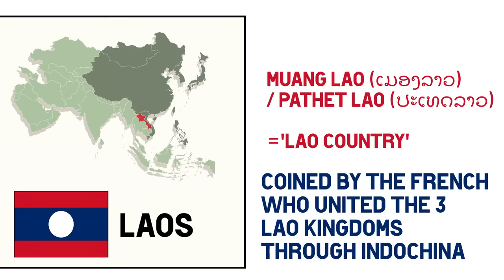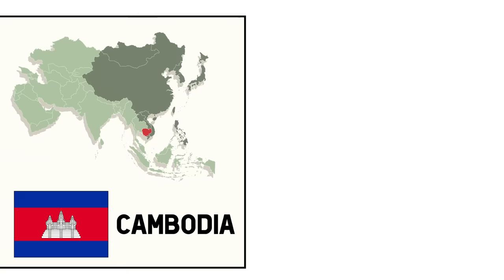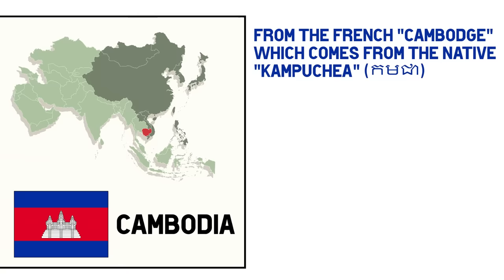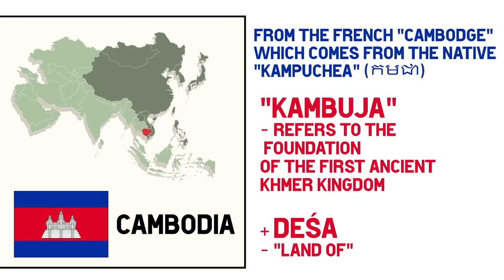Still in the area, Cambodia. The English Cambodia is an adaptation of the French Cambodge, which in turn is the French translation of Kampuchea in the native Khmer language. Its origin comes from the ancient Sanskrit language and the joining of two words: Kambu, which refers to the foundation myths of the first ancient Khmer kingdom, and Desa, which means land of or country of. So essentially the name would be land of the Khmer.